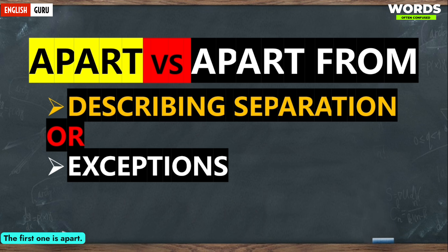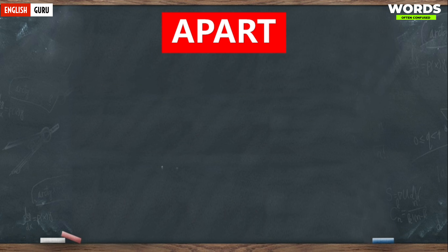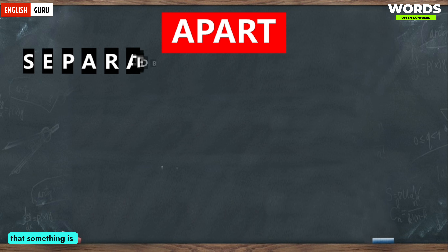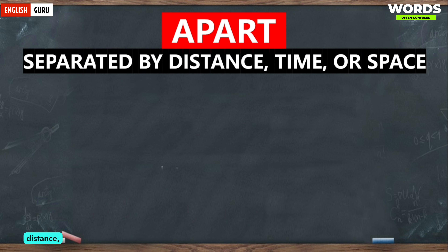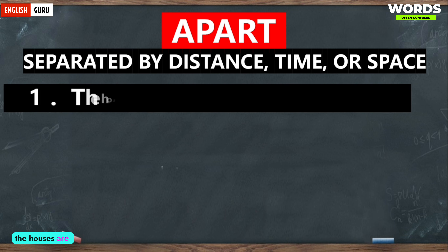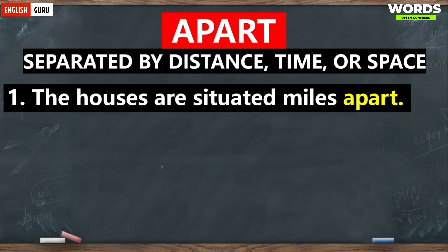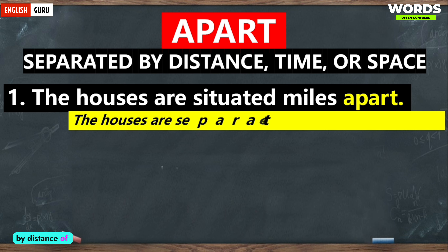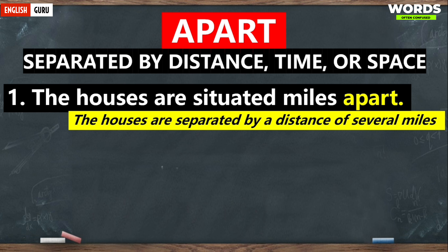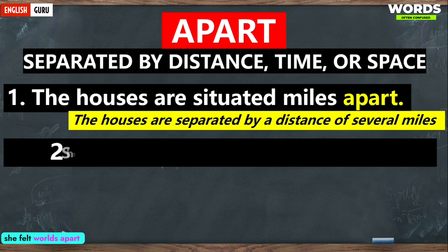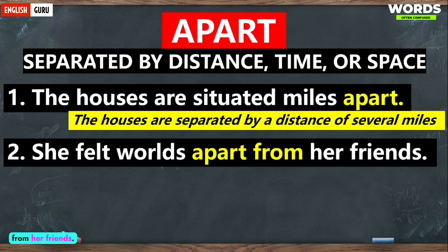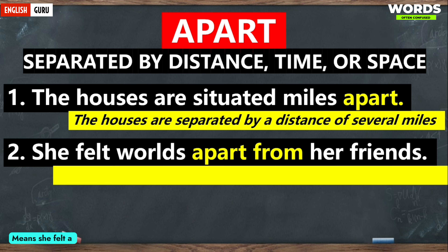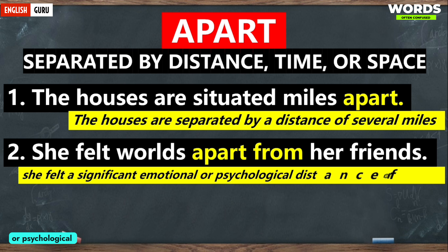The first one is 'apart.' Apart typically indicates that something is separated by distance, time, or space. For example, 'the houses are situated miles apart' means the houses are separated by a distance of several miles. The second sentence, 'she felt worlds apart from her friends,' means she felt a significant emotional or psychological distance from her friends.